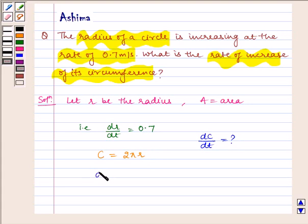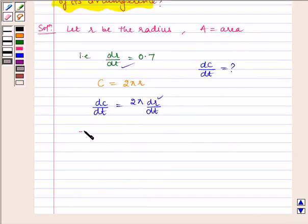Therefore, dc by dt is equal to 2 pi dr by dt. dr by dt is equal to 0.7. So, this implies dc by dt is equal to 2 pi multiplied by 0.7 which is equal to 1.4 pi.